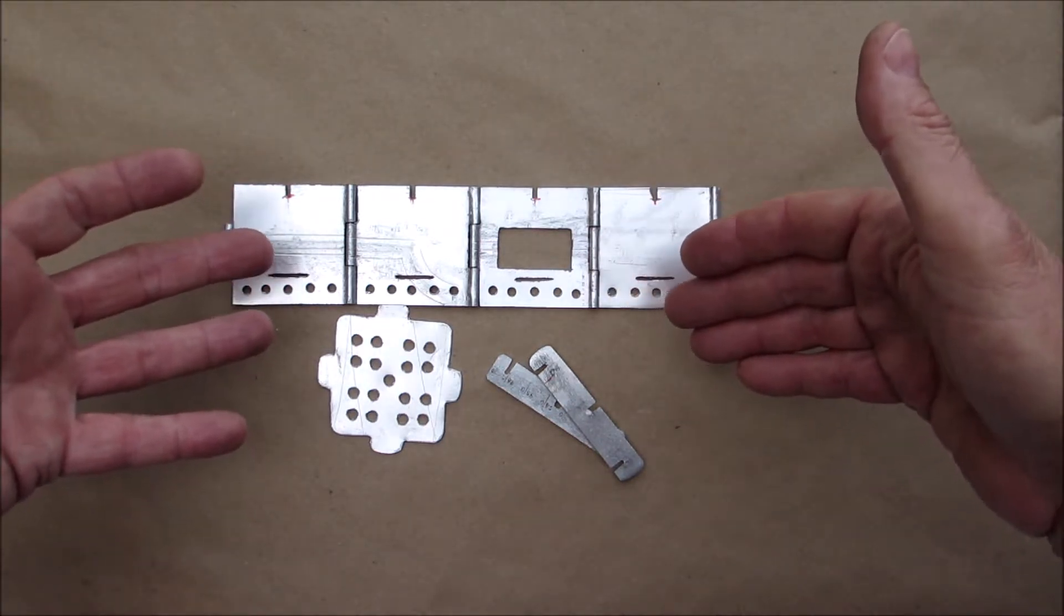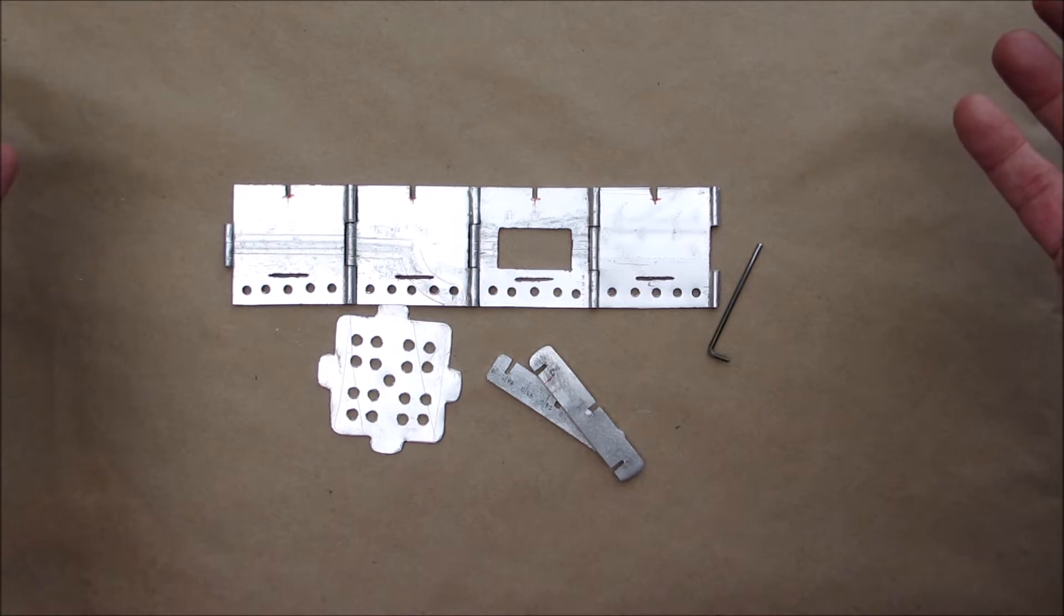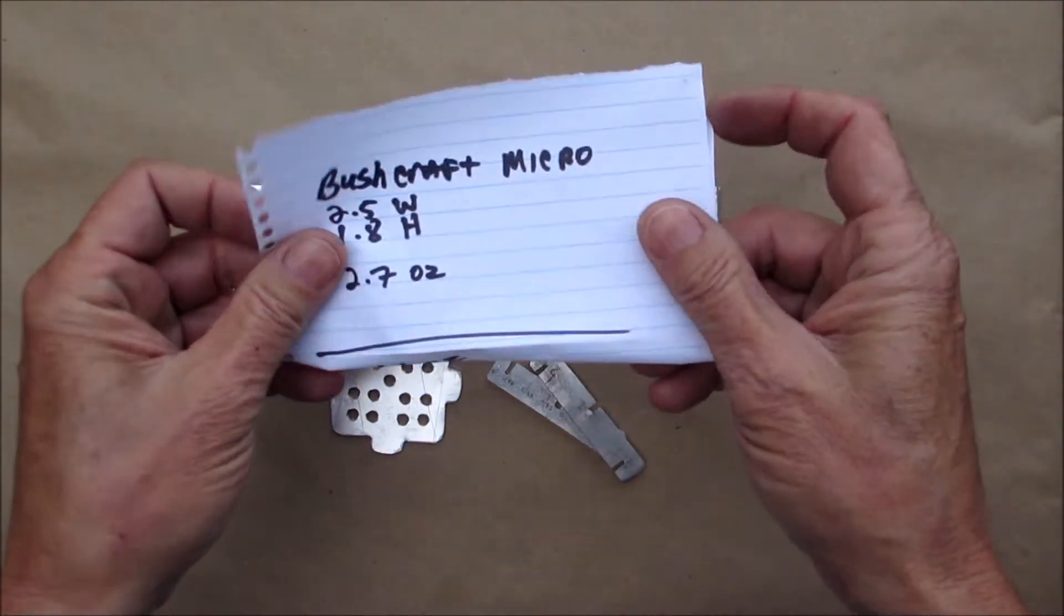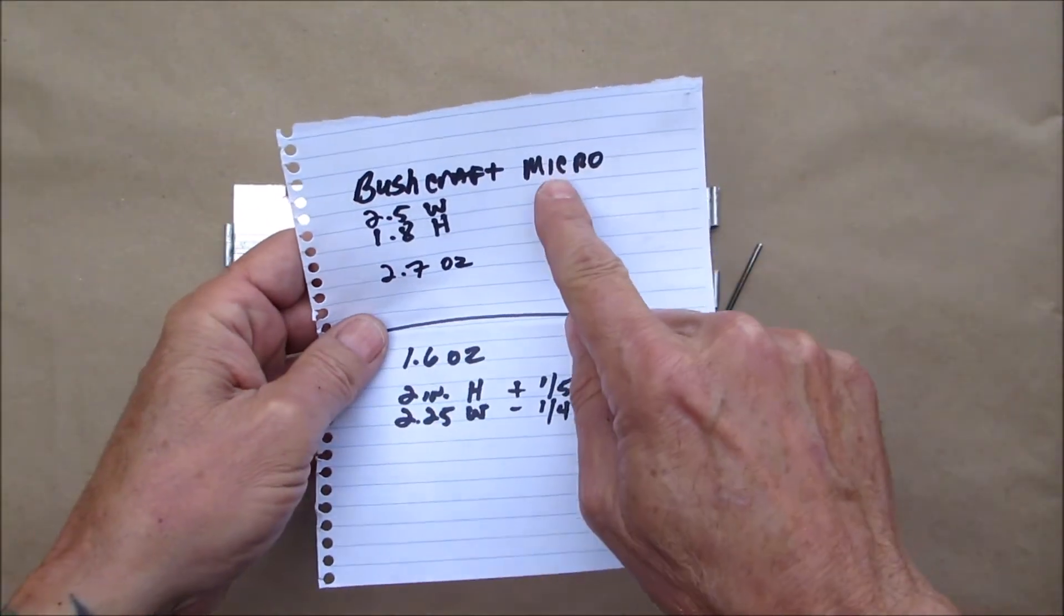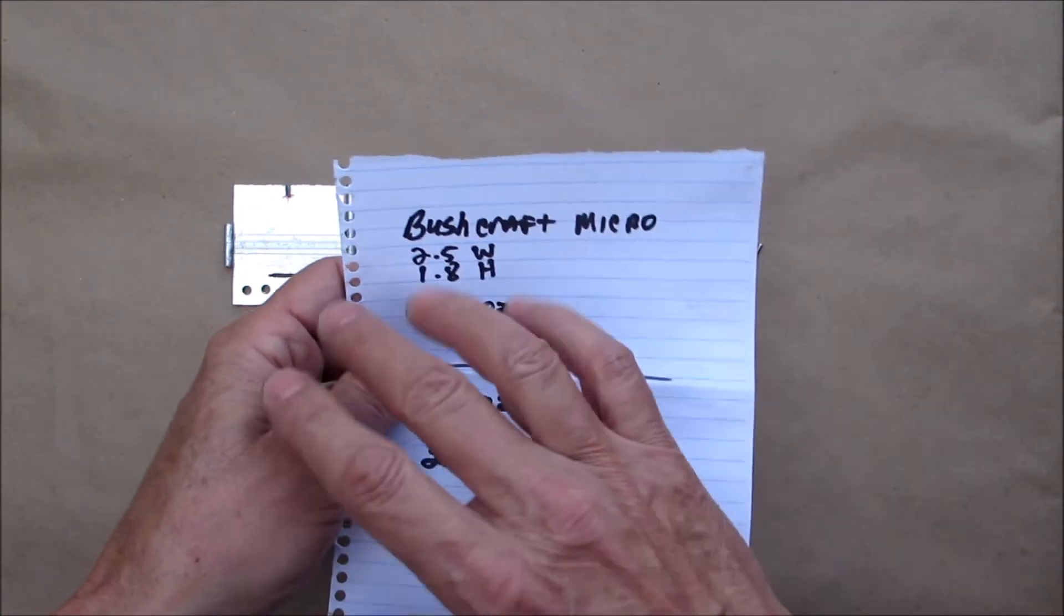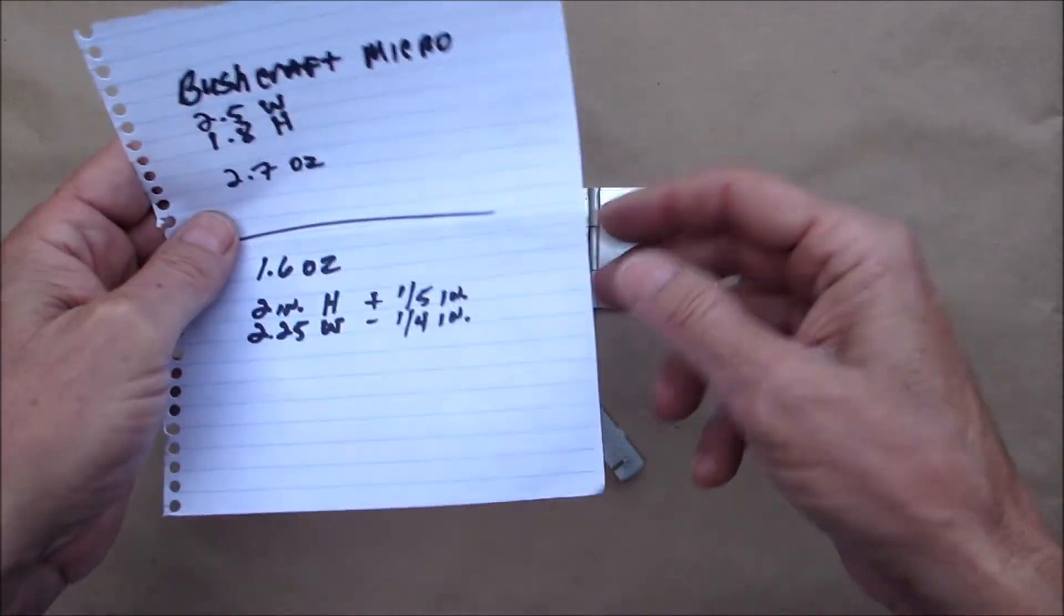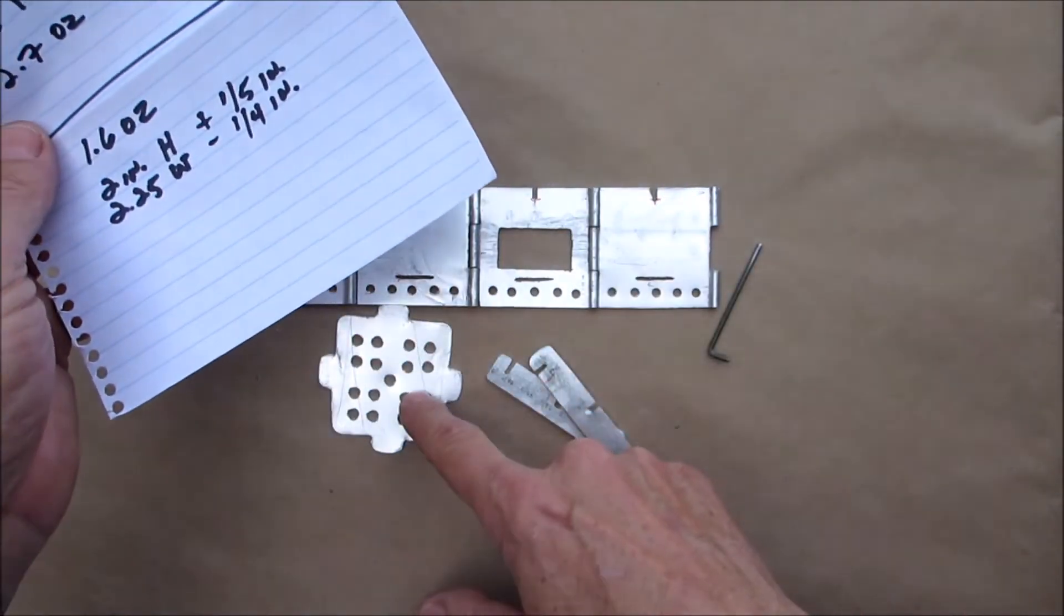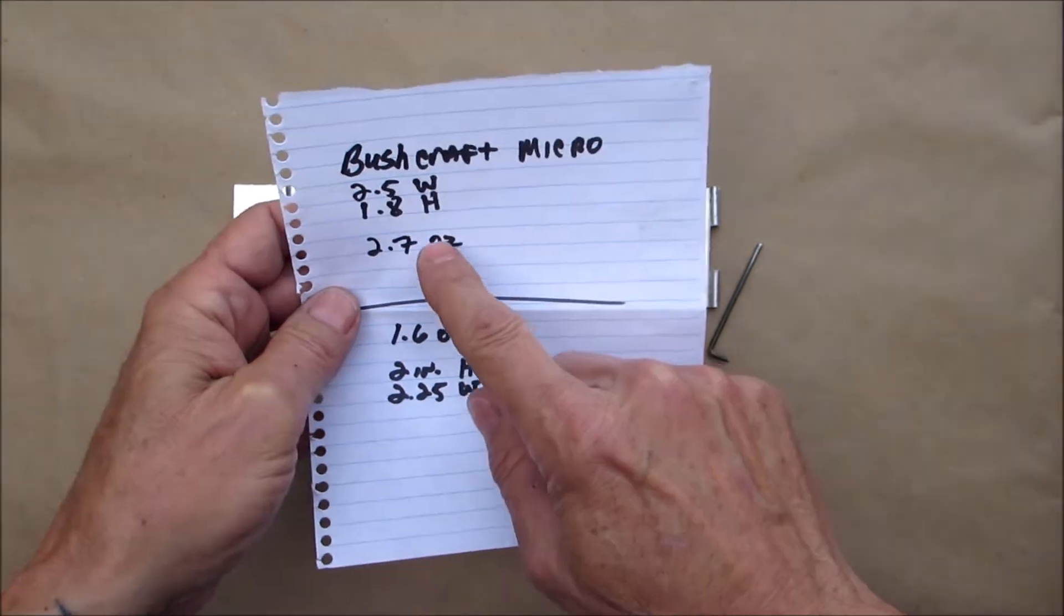After I made this and turned it into the actual stove, I said wow, it may actually really be the smallest one. So I started doing some research and I found this bushcraft micro. Now this isn't a folding stove, but it does come apart. It's four sides, you have to kind of snap them together and the base.